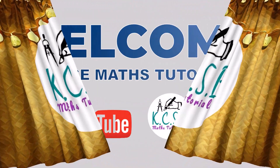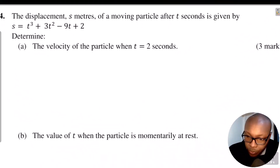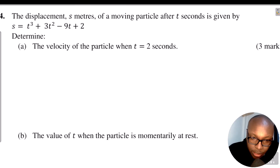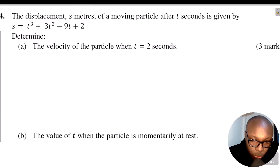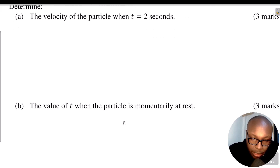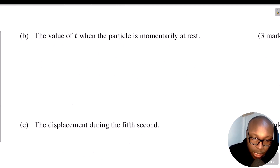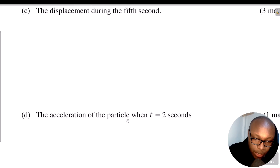Hello and welcome to the lesson. Let's solve this question on application of differentiation in kinematics. The displacement s meters of a moving particle after t seconds is given by s = t³ + 3t² - 9t + 2. Determine: part A, the velocity of the particle when t = 2 seconds; part B, the value of t when the particle is momentarily at rest; part C, the displacement during the fifth second; and part D, the acceleration of the particle when t = 2 seconds.